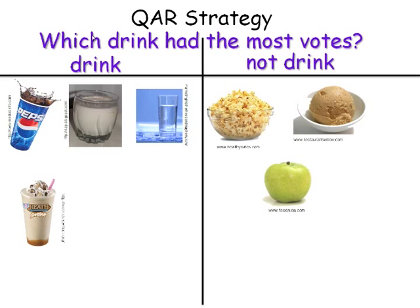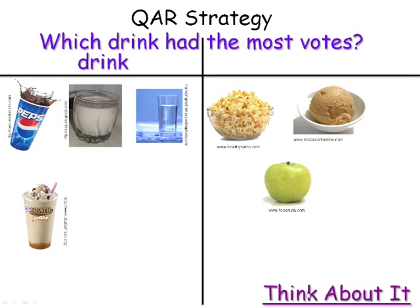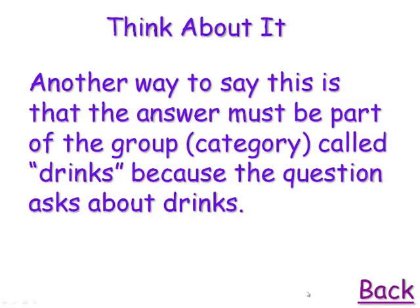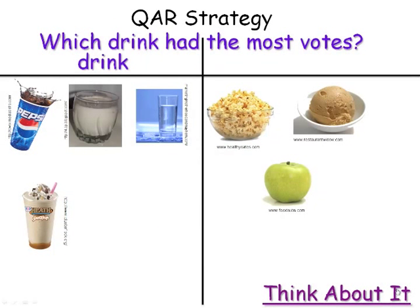Anything that's not a drink doesn't answer this question. So 'category' is one of the vocabulary words — the answer must be part of the category or group called drinks, because the question asks about drinks. Notice I didn't put the headings until they could explain why this group is together and why this group is like it is. Then you put the headings.